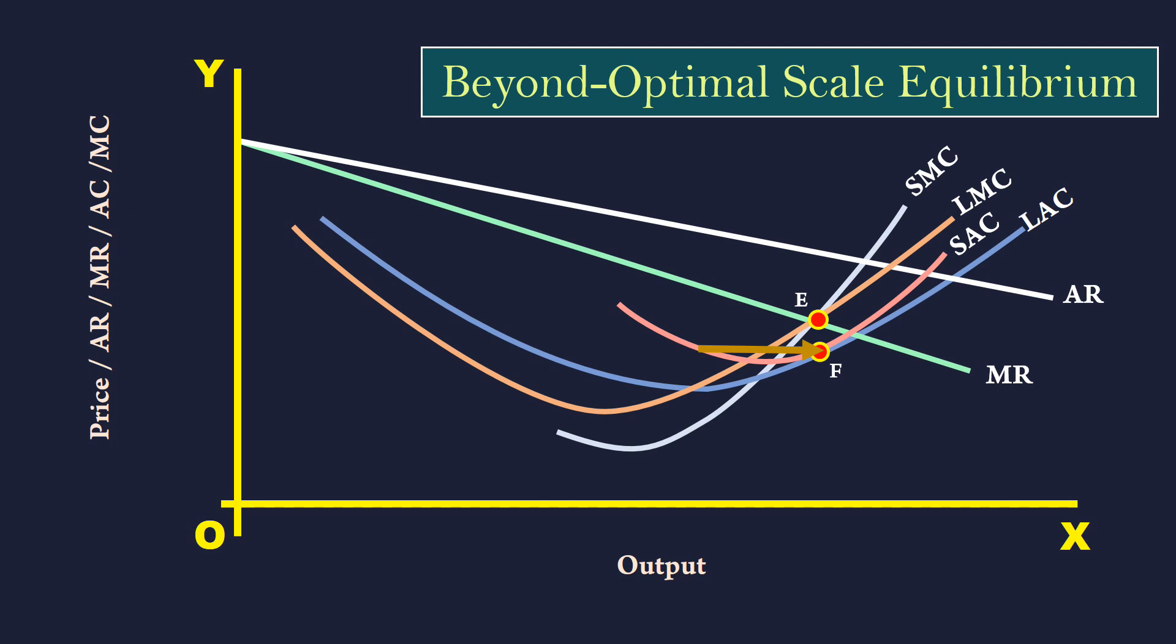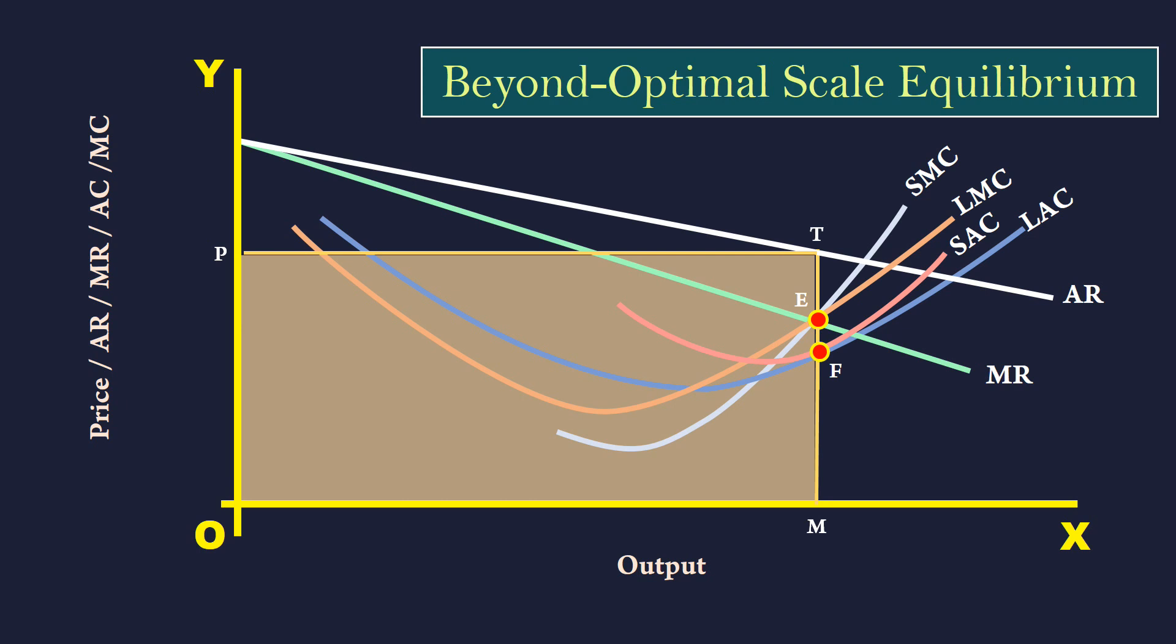Monopoly output is M units. Equilibrium price is P. Total revenue is OPTM. Total cost is OSFM. Supernormal profit is SPTF.